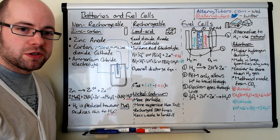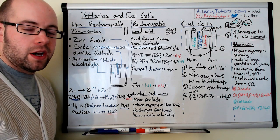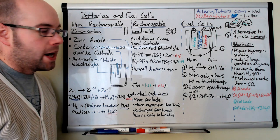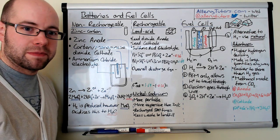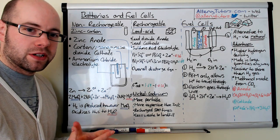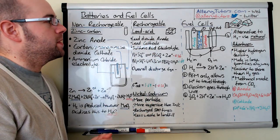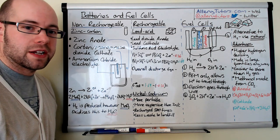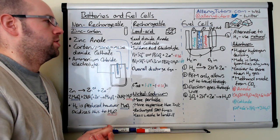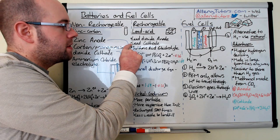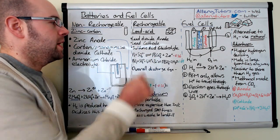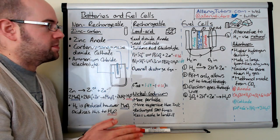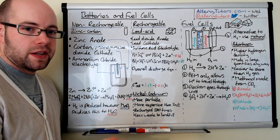Now we're going to look at rechargeable batteries — ones where you can plug them back in and reuse them over and over again. The first example is the lead acid battery, found in cars. This battery has a lead dioxide anode, which is the positively charged part, and a lead cathode, which is the negative end. The electrolyte is sulfuric acid, which sits between the positive anode and negative cathode.